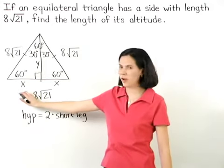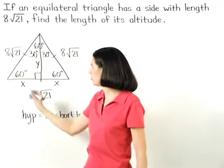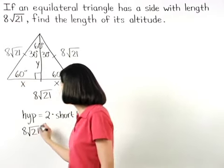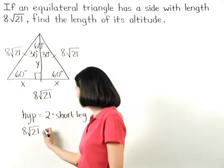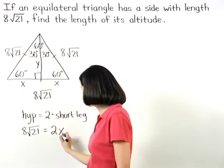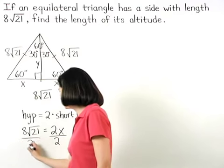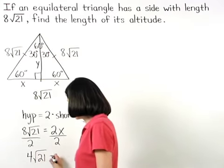So, working with the triangle on the left, the hypotenuse 8 root 21 is two times the short leg, or two times x, and dividing both sides by 2, 4 root 21 equals x.